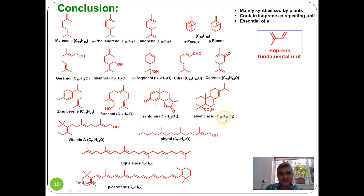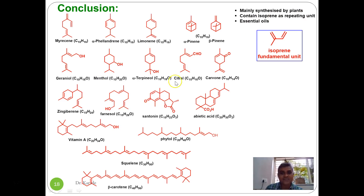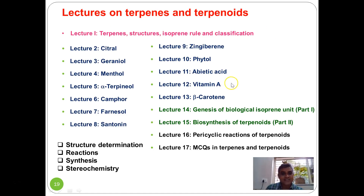In conclusion, terpenes and terpenoids are natural products synthesized from plants. They contain isoprene as a repeating unit, their carbon atoms are in multiples of five, and isoprene units are joined through head-to-tail linkages. They are used widely as essential oils. In the next lectures, the structure determinations, reactions, synthesis, and stereochemistry of individual molecules like citral, geraniol, menthol, alpha-terpineol, camphor, zingiberene, phytol, vitamin A, and beta-carotene will be covered.